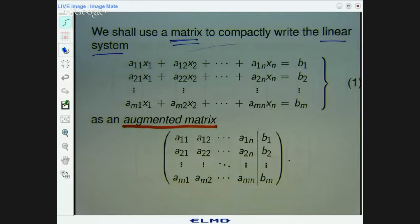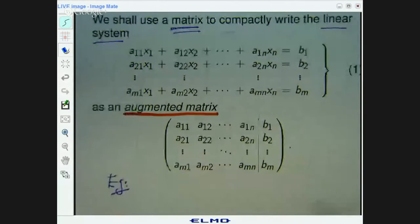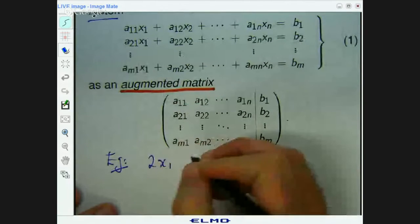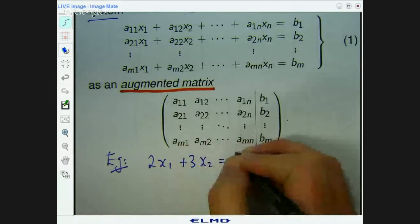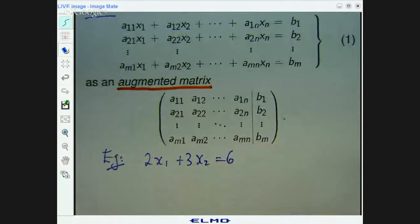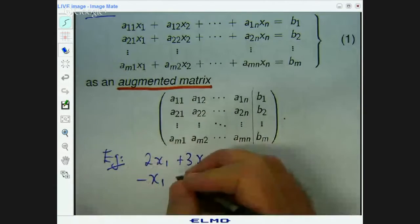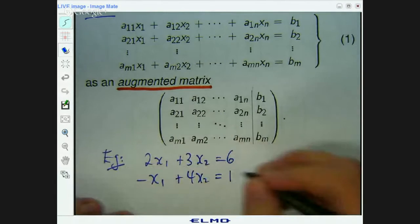Okay? Now, let me just give you a basic example. Suppose I have the following linear system. I've got 2x1 plus 3x2 equals 6. And I've got negative x1 plus 4x2 equals 1.